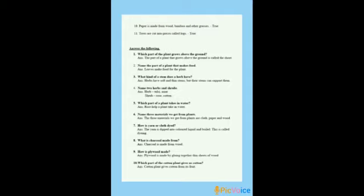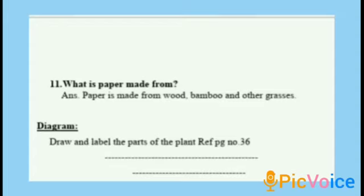Ninth: how is plywood made? Plywood is made by gluing together thin sheets of wood. Tenth: which part of the cotton plant gives us cotton? The cotton plant gives cotton from its fruit. Eleventh: what is paper made from? Paper is made from wood, bamboo and other grasses. Next: diagram — draw and label the parts of the plant. The main parts of the plant are root, stem, branches, leaves, flowers and fruit.